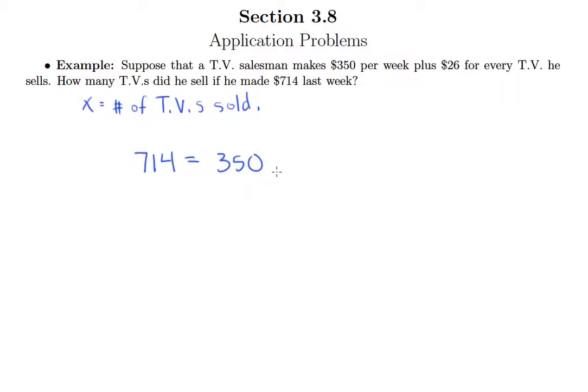Shouldn't multiply it by X or anything like that, because it does not depend upon how many TVs are sold. Then it says plus $26 for every TV sold. So that means we're adding on more to how much he makes, and we're adding on $26 for every TV sold.